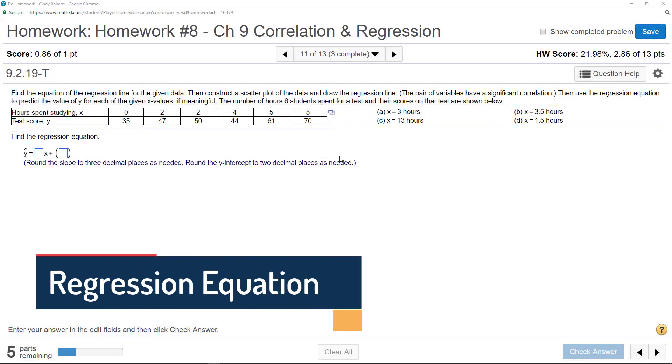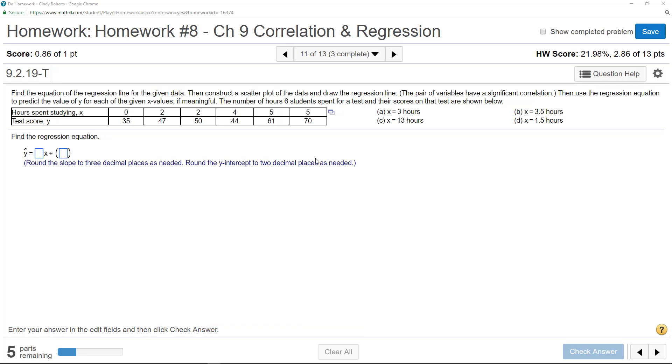We have some data given here that says the more hours you spend studying, your test score goes up. So that's what we basically want to see. We want to come up with a regression equation which is a prediction, so we could predict like, well, what if you study three hours?